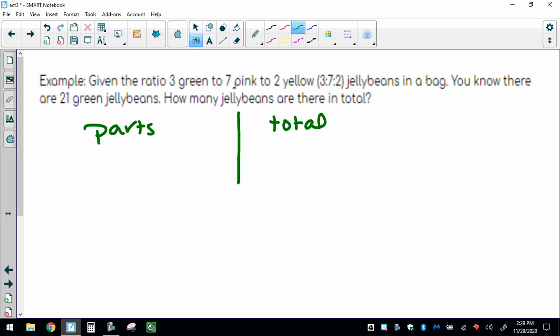3 green, 7 pink, 2 yellow. And so it even gives it to you: 3 parts, 7 parts, and 2 parts. And remember, add those all together to get your total. So 3 plus 7 plus 2 gives us a total of 12 parts.